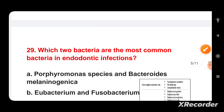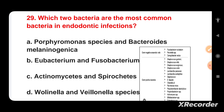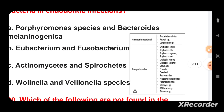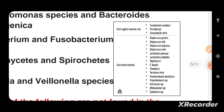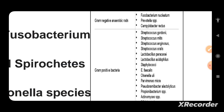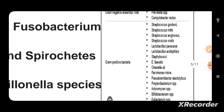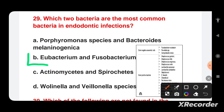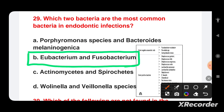Which two bacteria are the most common in endodontic infection? Options are: Porphyromonas species and Bacteroides, Eubacterium and Fusobacterium, Actinomycetes and Spirochetes, or Veillonella species. Gram-negative anaerobic bacteria including Fusobacterium, Prevotella, and Campylobacter, and gram-positive organisms like Streptococcus are present in endodontic infections. However, Eubacterium and Fusobacterium are the most common bacteria in endodontic infection.